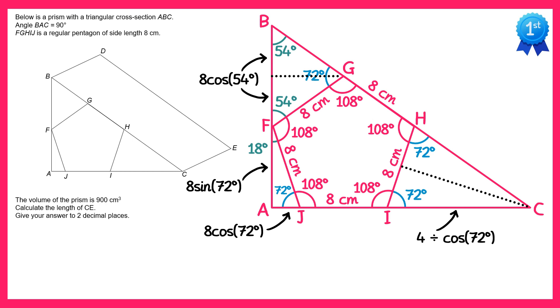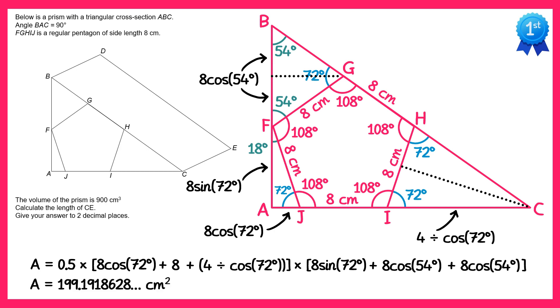Now with all of this information we can work out the height of the triangle and also the base of the triangle, so we're ready to work out the area. So the area equals one half times the base, now the base is all of the bottom lengths added together, so we've got 8cos72, we've also got the base of the pentagon which is 8, and then this side IC which is 4 divided by cos72. And then we multiply this by the perpendicular height which is equal to 8sin72, plus 2 lots of 8cos54. Now if you type all of this into your calculator you'll find the area of this triangle is equal to 199.1918628cm².